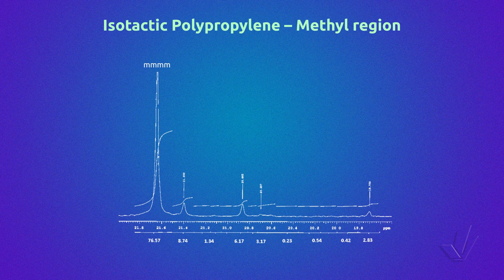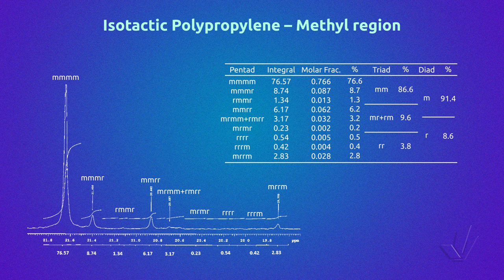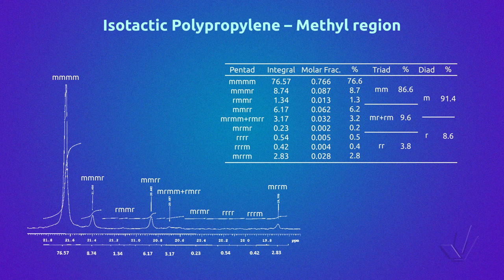The main resonance corresponds to the MMMM pentad. Then there are other minor resonances that correspond to other pentads that have been assigned in the spectrum. For the calculation of tacticity, we take the integral of each pentad region, obtain the molar fraction by adding all integrals and dividing the integral of each resonance by the total integral, and then multiply by 100 to obtain the percentage of each pentad.